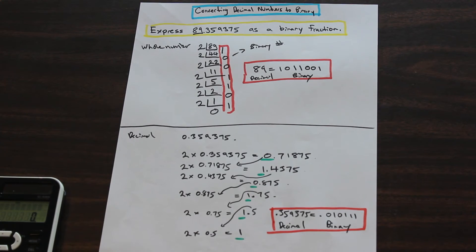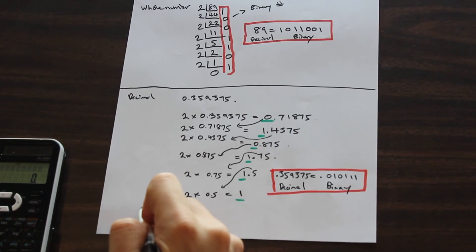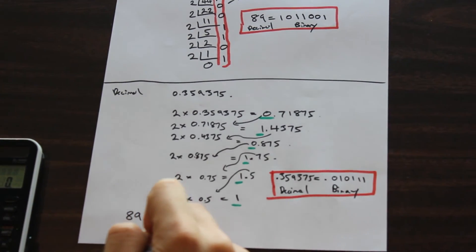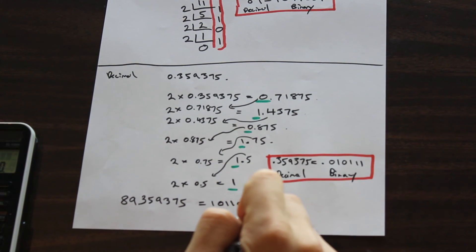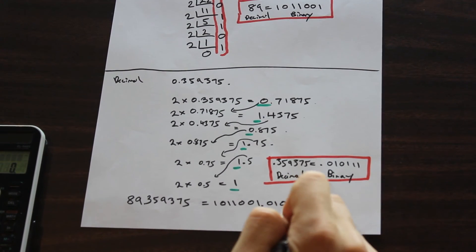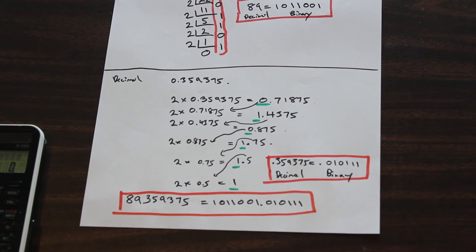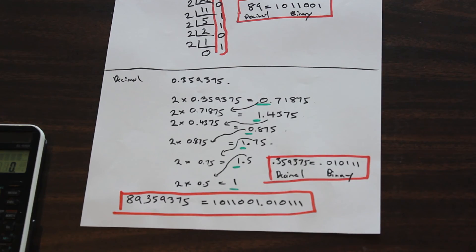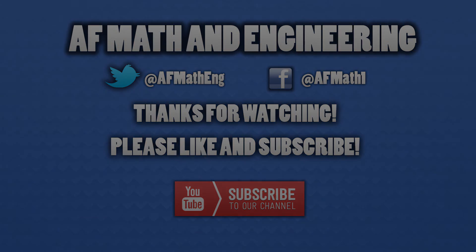What's our final answer here? All we need to do is we need to just combine the whole numbered binary and the decimal binary together at the bottom. And that is equal to 89.359375 equals 1011001.010111. And that is it. Thanks for watching this video. I hope that helps you understand how to convert decimals to binary. Like and subscribe.